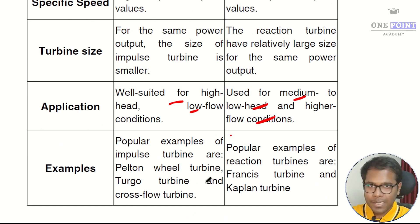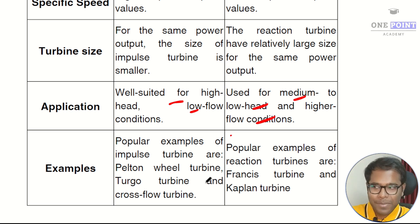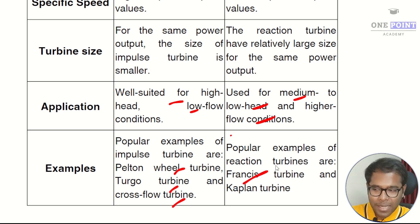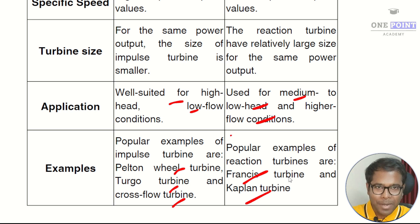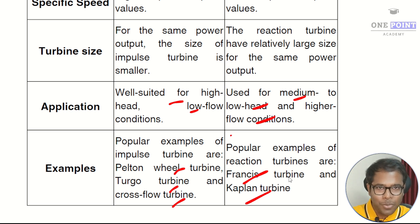Popular examples of impulse turbines are the Pelton wheel turbine, Turgo turbine, and cross-flow turbine, whereas popular reaction turbines are the Francis turbine and Kaplan turbine. The Pelton wheel turbine has already been covered in detail — covering all theory, derivations, and numericals in two separate videos — with direct links provided in the video description.